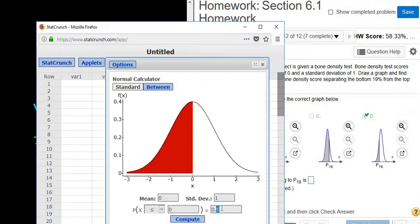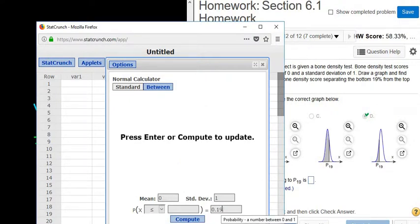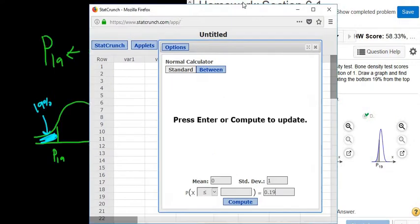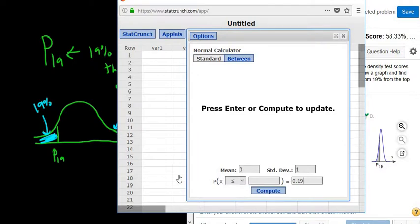And then you enter the 19% in the second box. Always the second box for percentiles, right? Because we're told the area is 0.19. And it's always less than for percentiles, because it's always to the left.